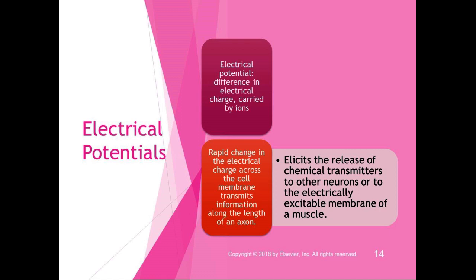To change from the resting membrane potential, a rapid change in electrical charge happens across the cell membrane. This transmits information along the length of the axon and elicits the release of chemical transmitters to other neurons or to the electrically excitable membrane of a muscle.